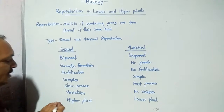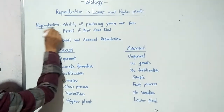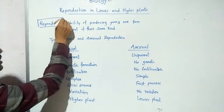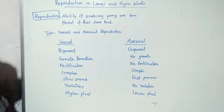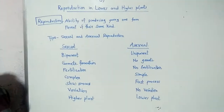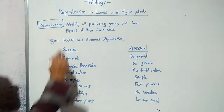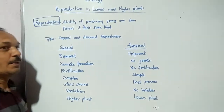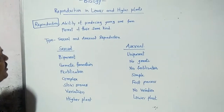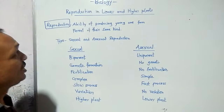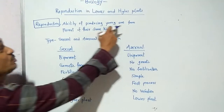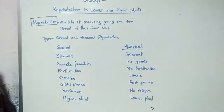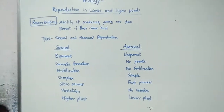The most important process in living organisms, and an important characteristic feature, is reproduction — which is very essential and plays a very important part in evolution. Reproduction is the ability of a living organism to produce a young one from their parental one of the same kind.